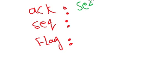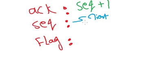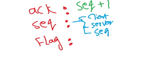You should notice that the acknowledgement is always the sequence plus one — all the time, the acknowledgement is sequence plus one. When we're talking about a sequence, we have a sequence of the client and we have a sequence of the server. Also, sometimes the sequence needs to be equal to the acknowledgement — specifically, the sequence is equal to the acknowledgement in the established connection step.